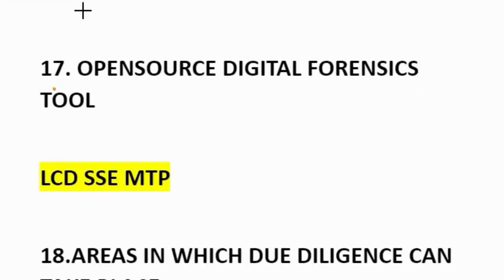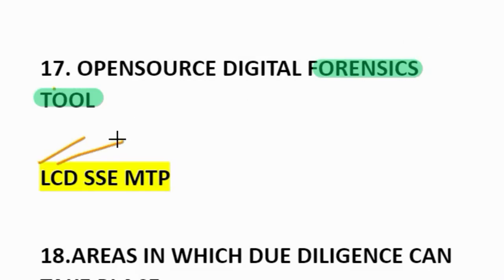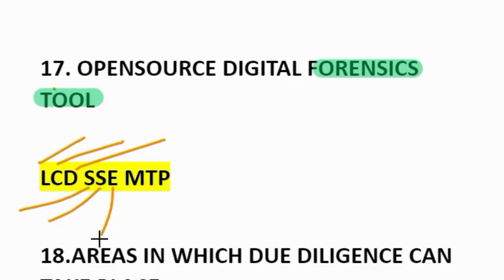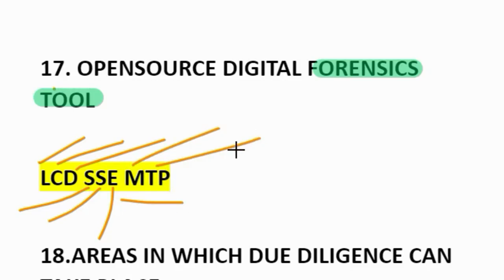Seventeenth question: open source digital forensic tools available for the auditor. How to remember? LCD SSE MTP. LCD: L for live analysis, C for cross drive analysis, D for deleted files. LCD completed. SSE: S for stochastic forensics, S for steganography, E for EnCase. SSE completed. MTP: M for MD5, T for tracking log files, P for PC system log. LCD, SSE, MTP completed.